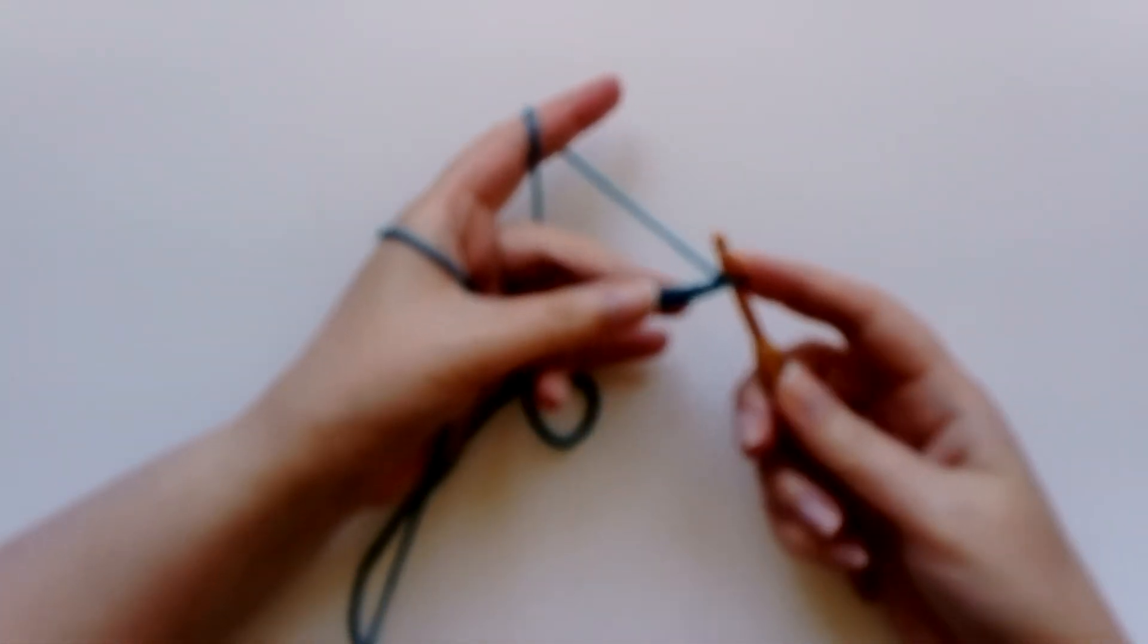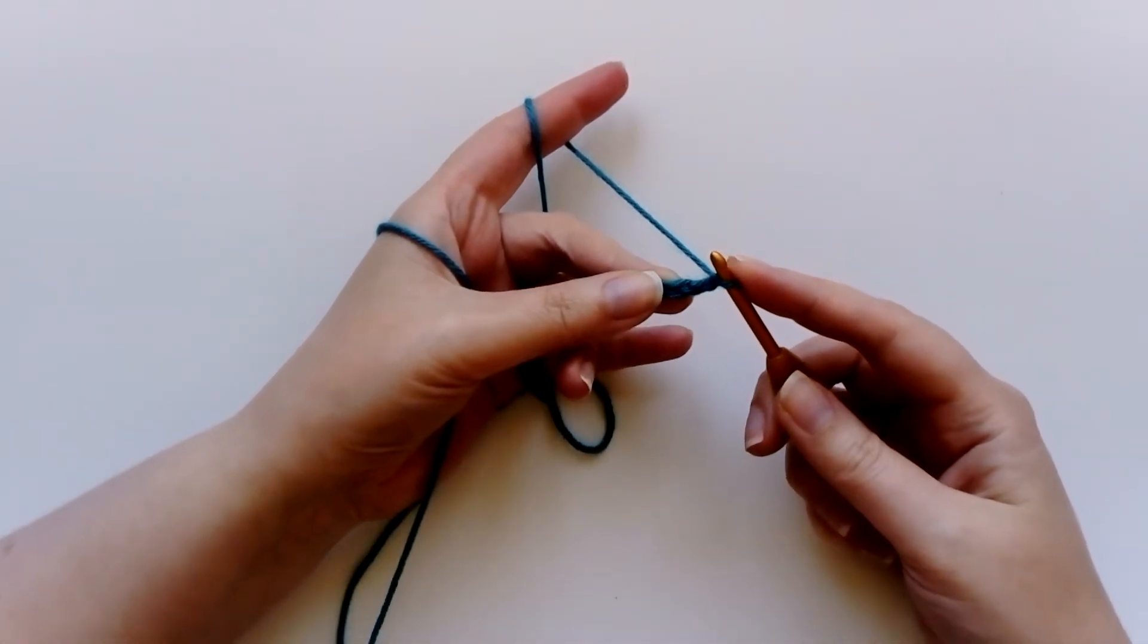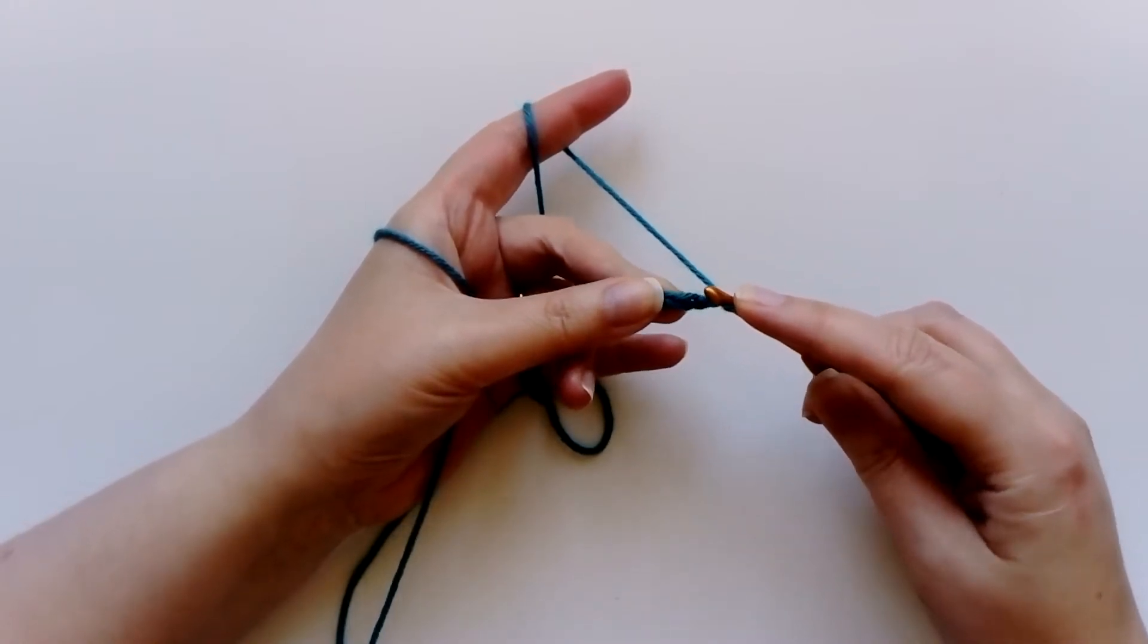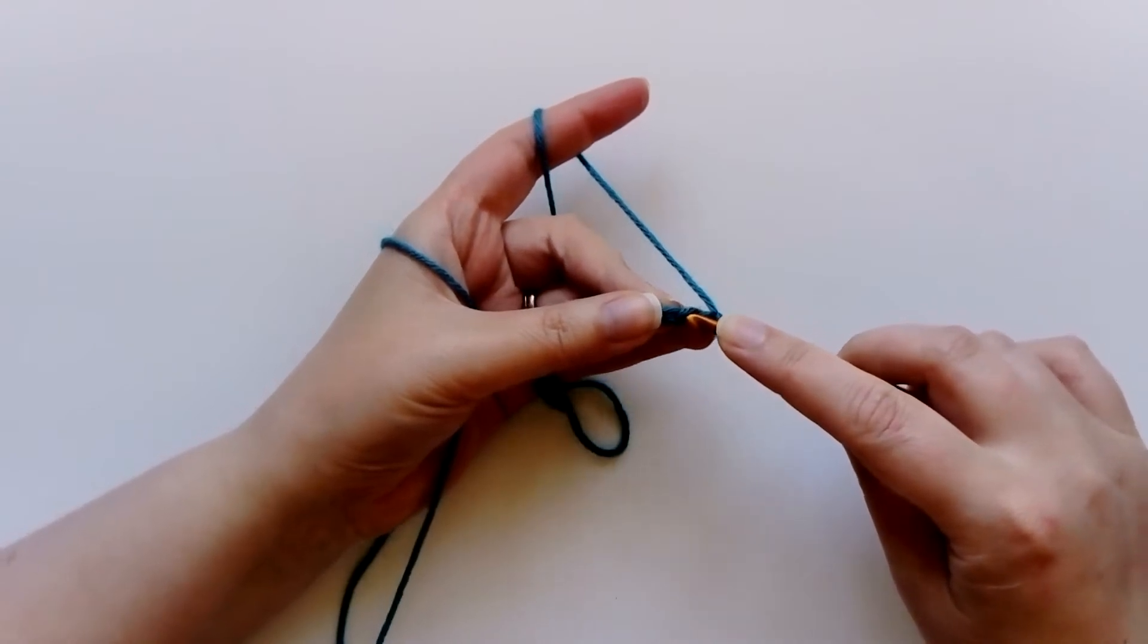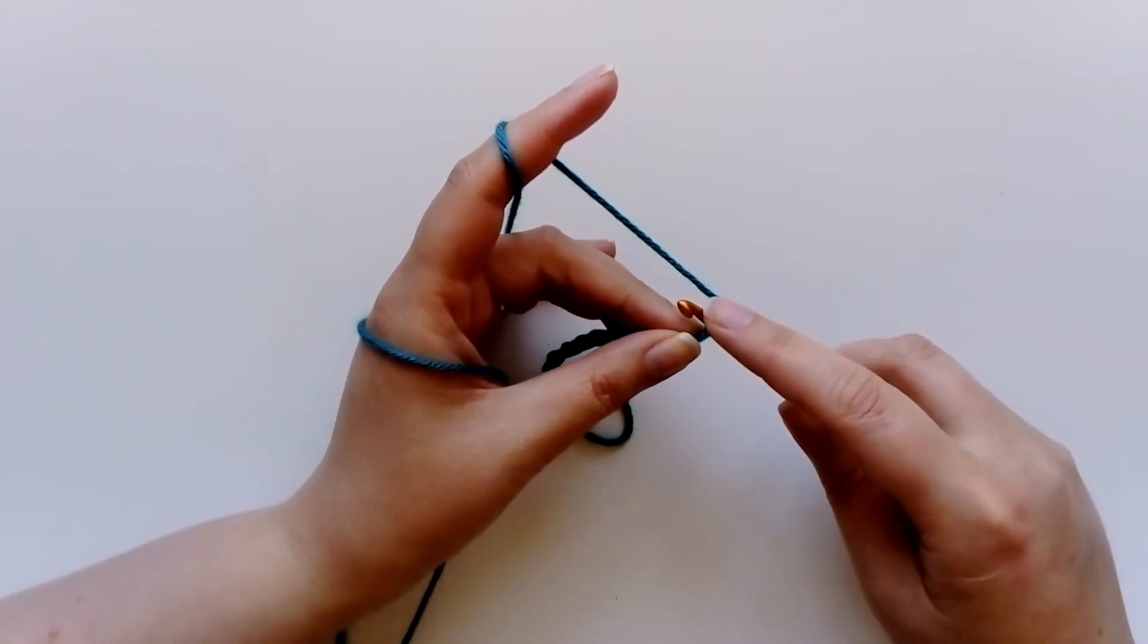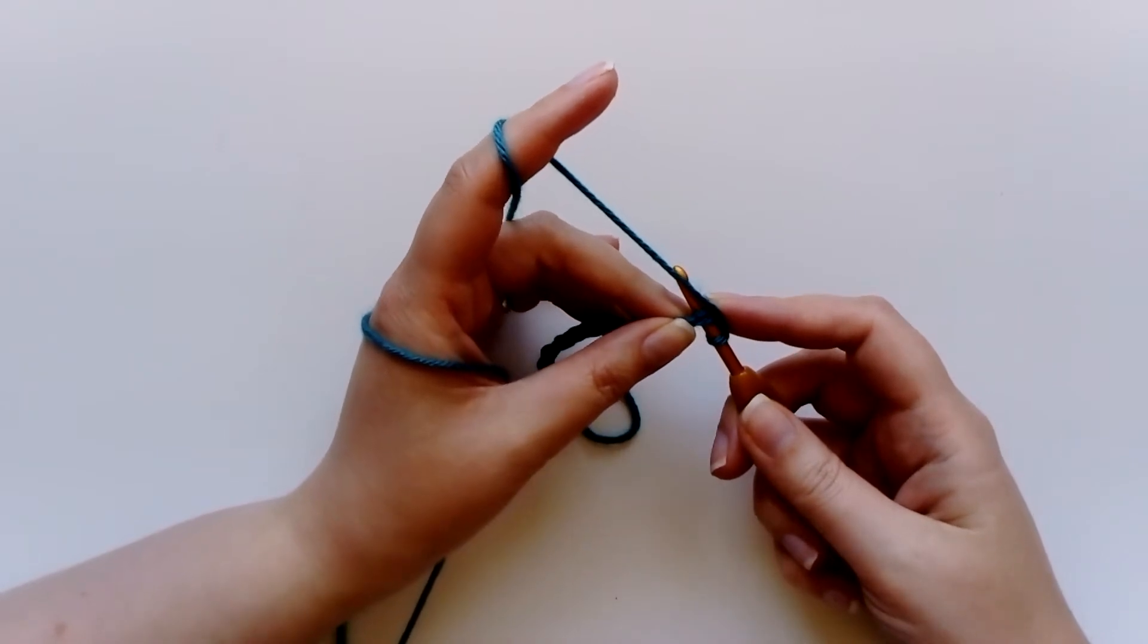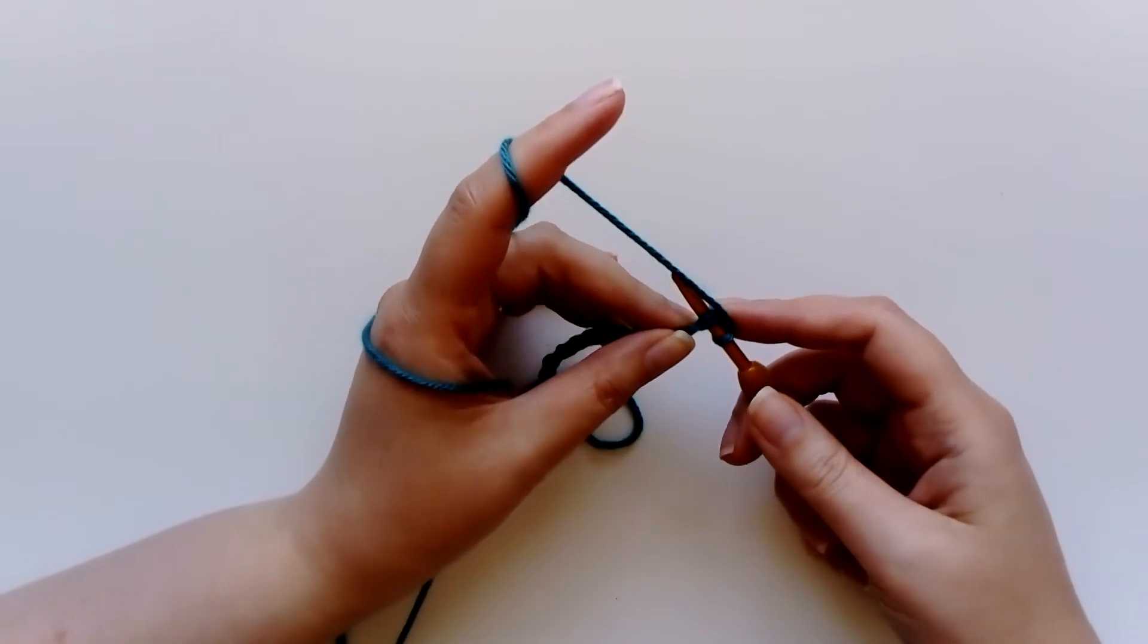So, yarn in my left hand, hook in my right hand. Looking at the chains I've already done, I'm going to start by inserting my hook into the second one, so not the very closest one, the second one from my hook, and I'm going to put it in just underneath two strands, so I've got two strands on top of my hook and one strand on the bottom of my hook. Other people put one strand on top and two on the bottom, doesn't matter which, just be consistent, make it the same with everyone.